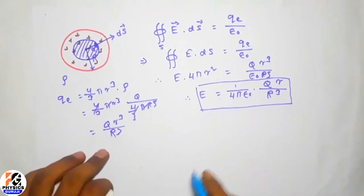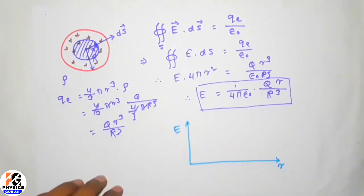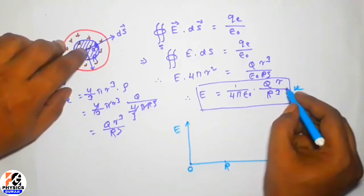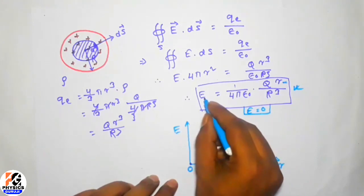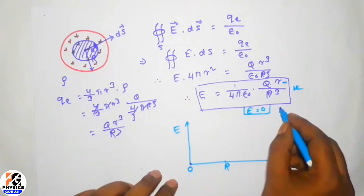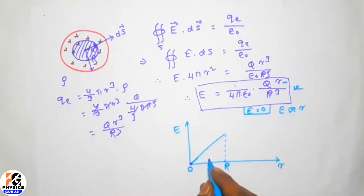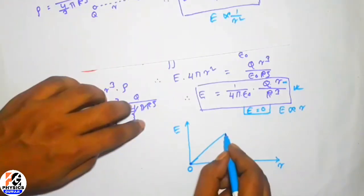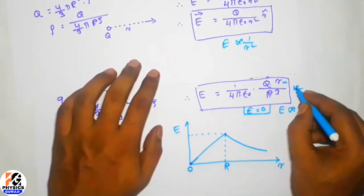Now let us draw a graph between electric field E and distance r from the center to visualize the variation. From the origin to capital R is the inside region, and from capital R onward is outside. At the center where r equals zero, E equals zero, so the graph starts from the origin. Inside the sphere E is proportional to r, so the graph is a straight line. Outside the sphere E is proportional to 1 over r², so the graph is a hyperbolic curve. The field increases linearly up to the surface and then decreases.